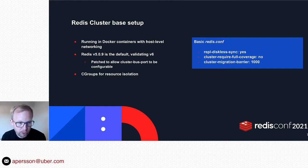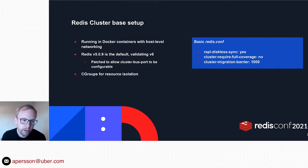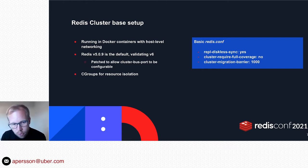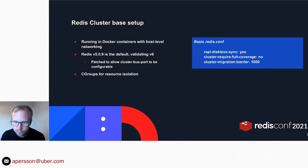Before going into those two things, here's a quick overview of Redis at Uber. We run in Docker containers with host-level networking. The default version of Redis today is version 5, but we are currently validating version 6. Because our environment doesn't allow any sort of static ports, we can't use the default behavior of Redis cluster of assigning the Redis port plus 10,000 as the cluster bus port. So we have a small patch applied to Redis that allows us to specify the cluster bus port that we need.